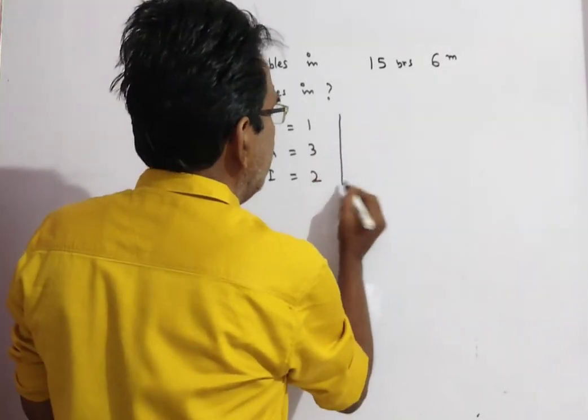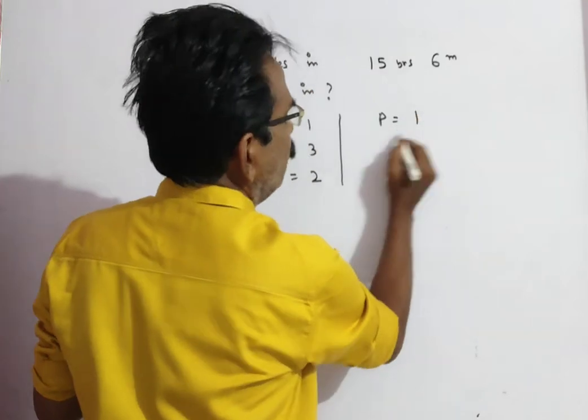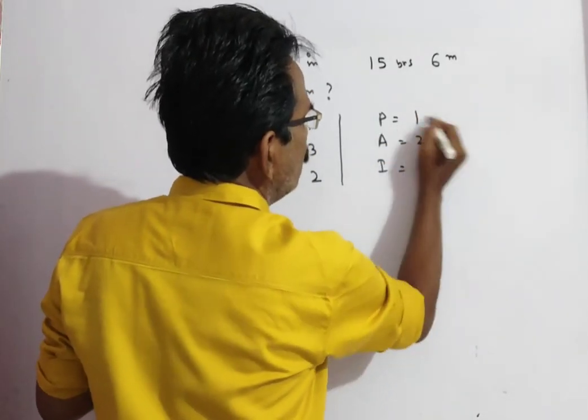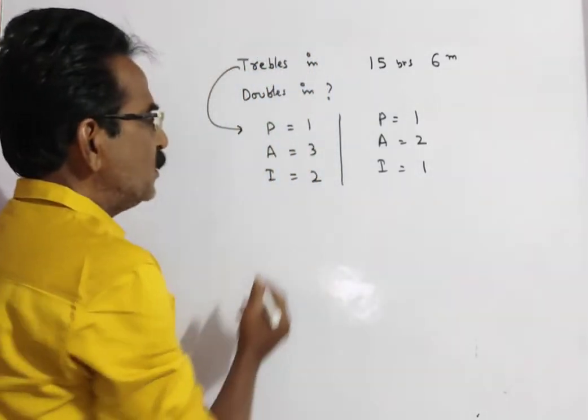In case of double, P is equal to 1, A is equal to 2, I is equal to 2 minus 1, which is 1.